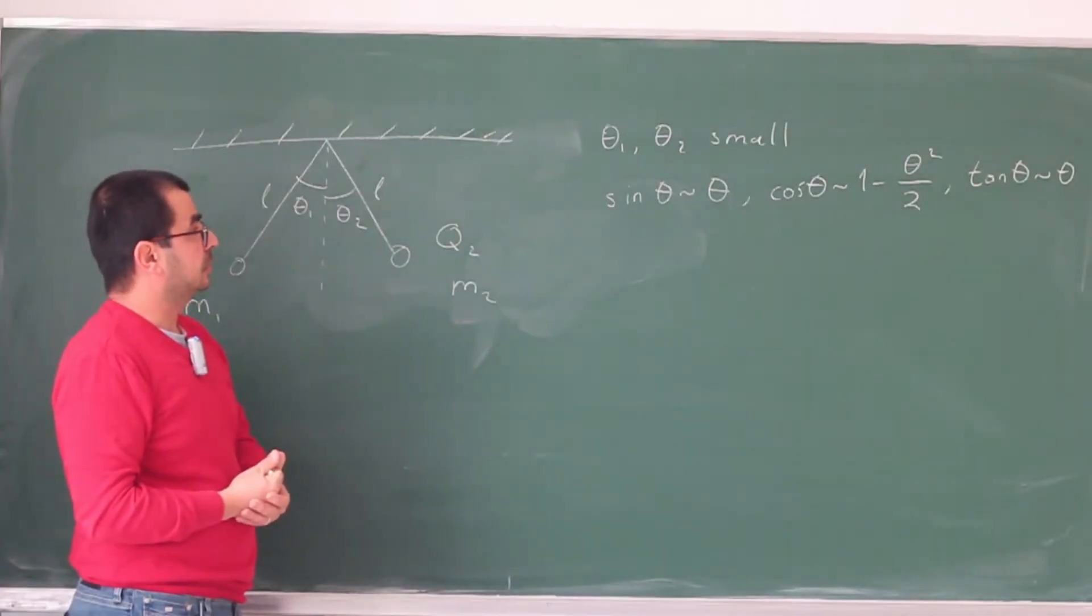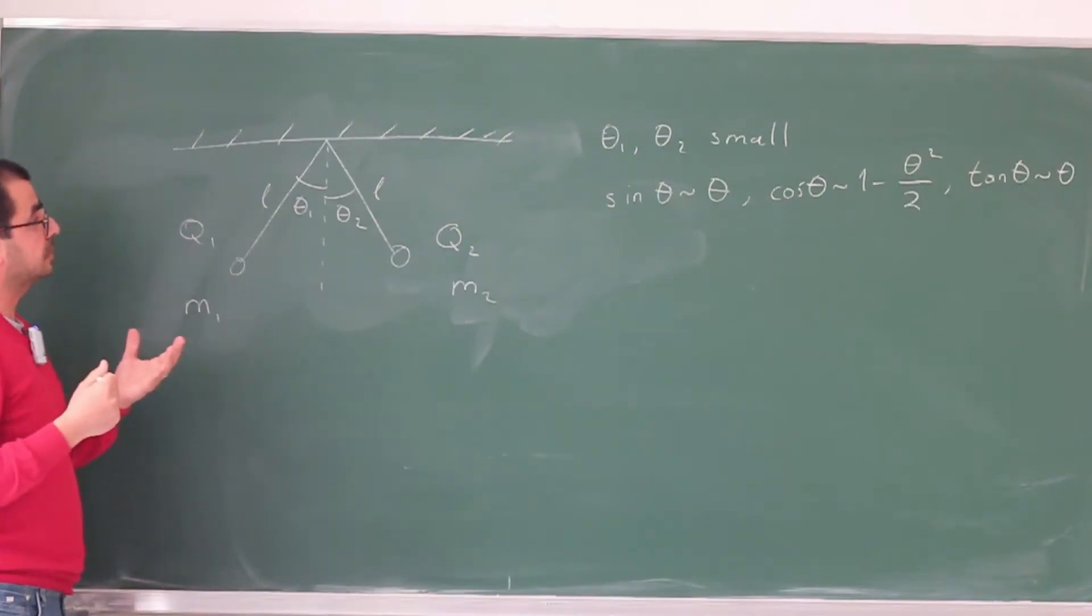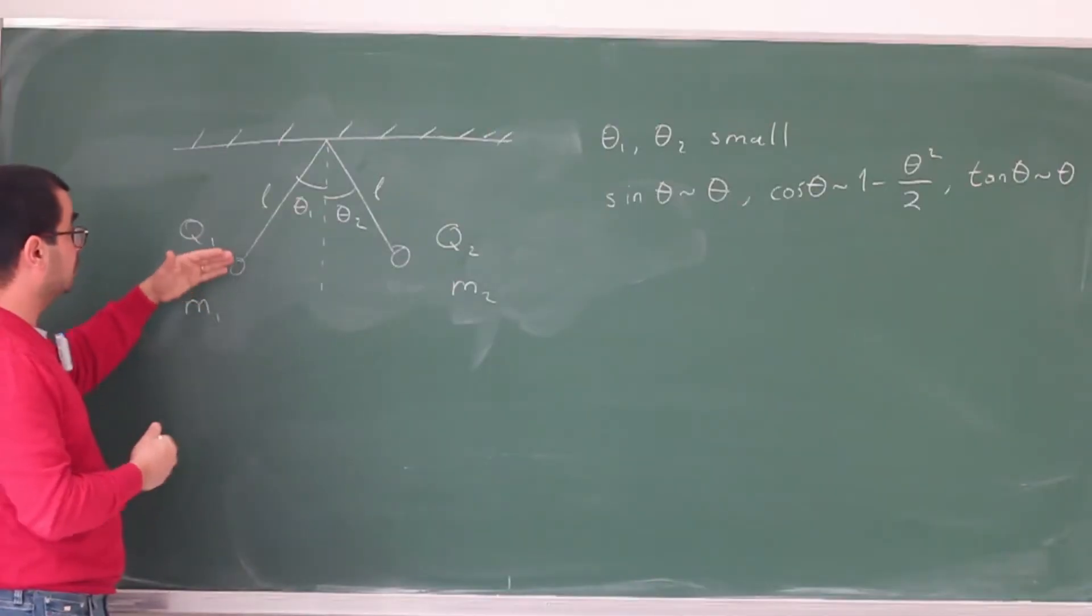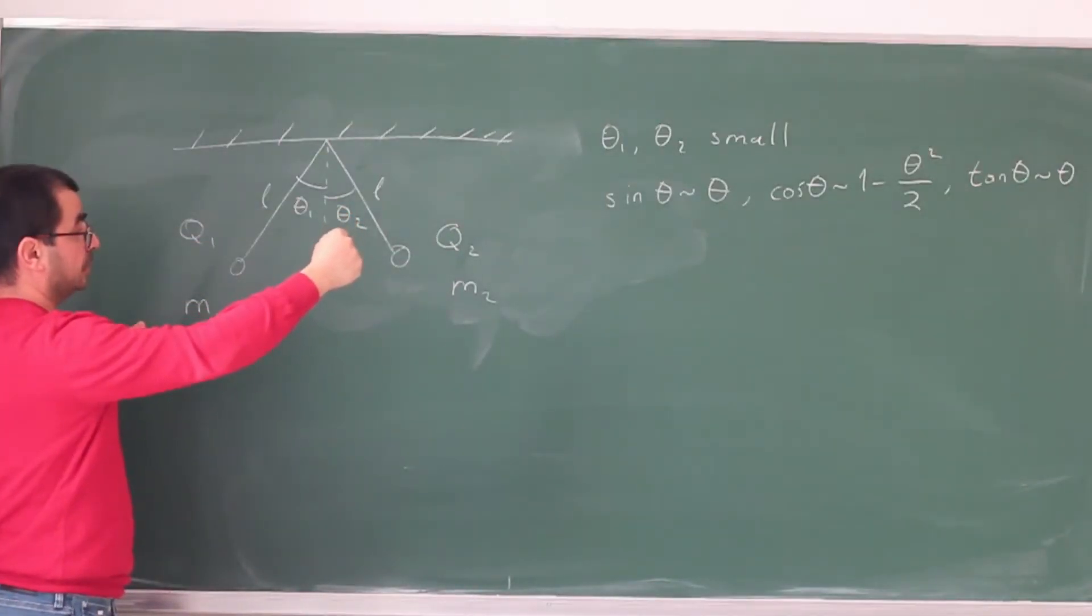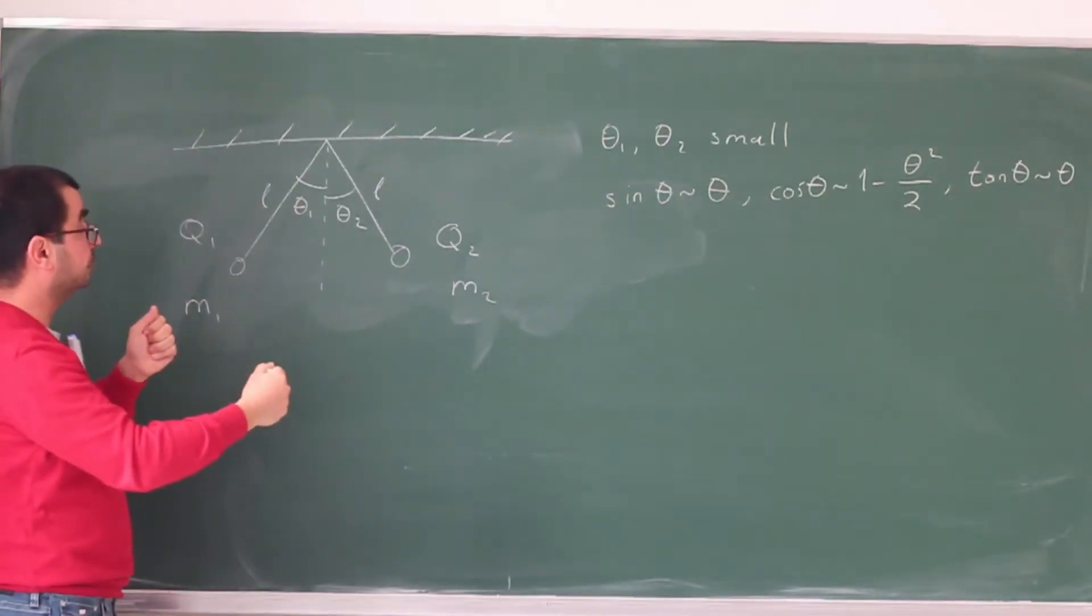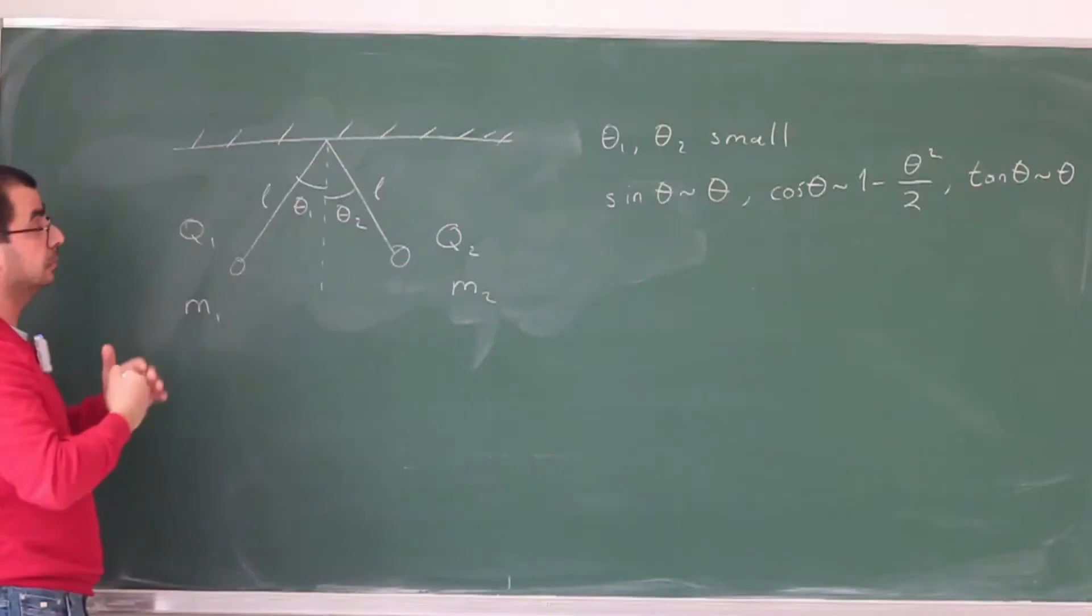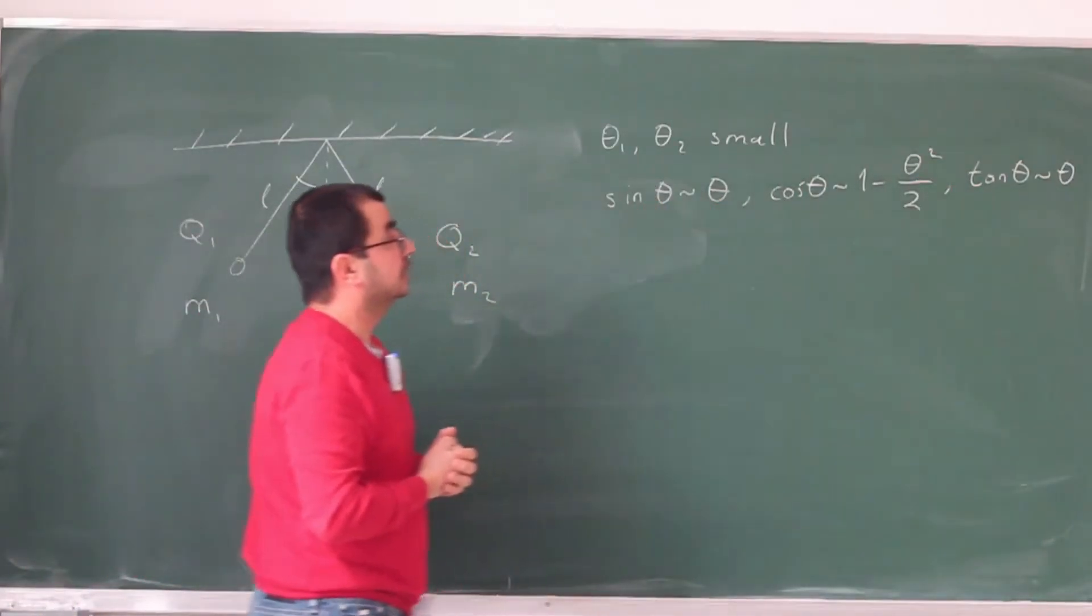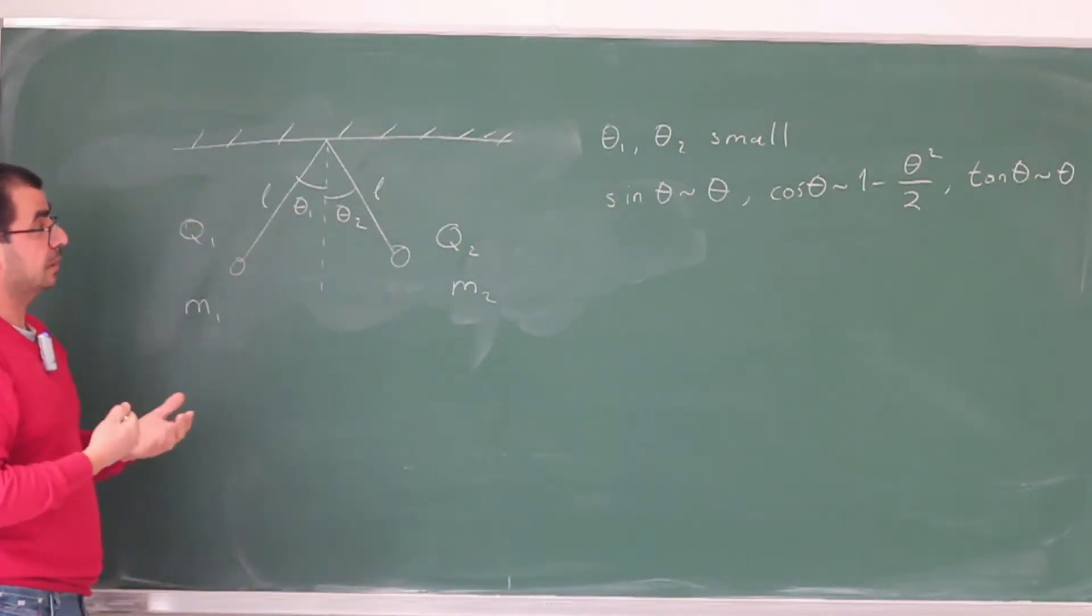As I said, I didn't notice this initially, but when I started thinking about the problem, I realized that this will be quite important. Because if you are looking at the general case, if this theta1 and theta2 are large, then in principle, these could be at different heights. And if they are at different heights, then the problem gets very complicated, because when they are at different heights, the electrostatic force between them is not going to be perfectly horizontal. But if the angle is small, then they actually do not change their height, or the change in the height is of the second order in theta.